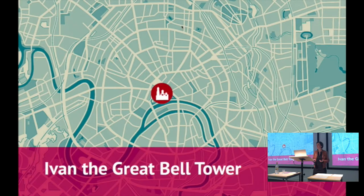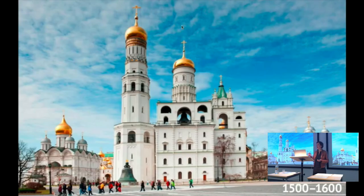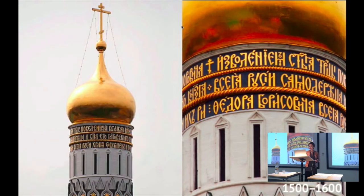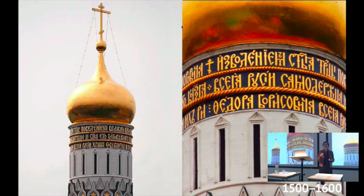We begin in the center of Moscow with the Kremlin. You see here the bell tower called Ivan the Great. For a long time, it was the tallest building in Moscow. And the main ornament is the golden lettering.